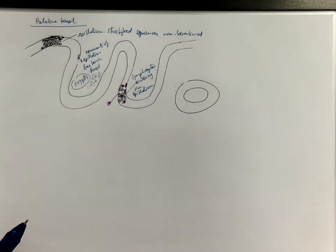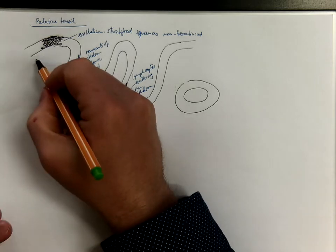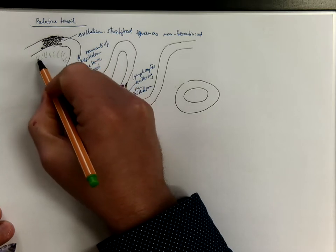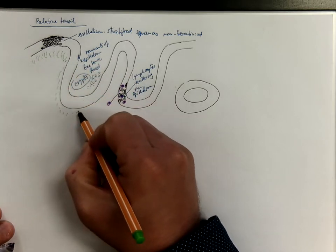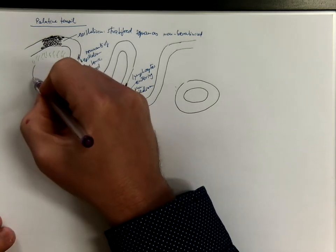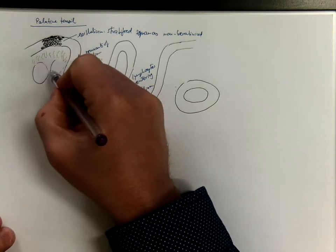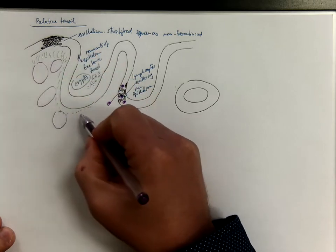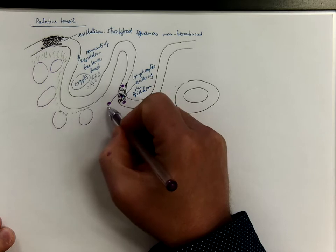And below the epithelium there is the lamina propria, made of loose collagenous connective tissue, mostly reticular connective tissue. But you can find accumulations of lymphocytes here. The so-called lymphoid follicles.